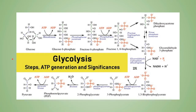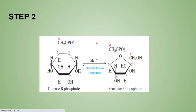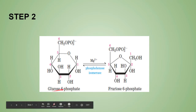The glycolysis pathway has 10 steps. Of these, steps 1, 3, and 9 are irreversible; the rest are reversible. Step 1: glucose, along with ATP, in the presence of the enzyme hexokinase and magnesium, is converted to glucose-6-phosphate. One ATP is consumed, and the phosphate is added at the sixth carbon position.